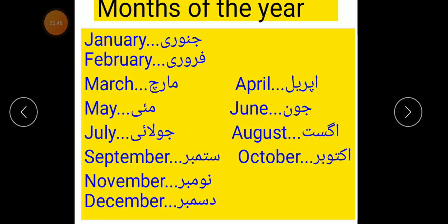J-A-N-U-A-R-Y January. F-E-B-R-U-A-R-Y February. M-A-R-C-H March. A-P-R-I-L April.